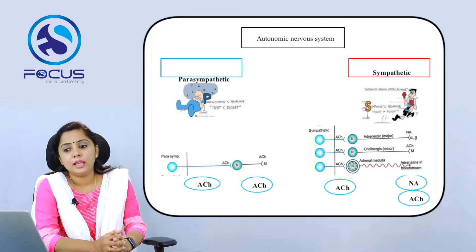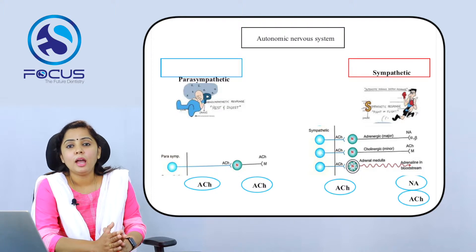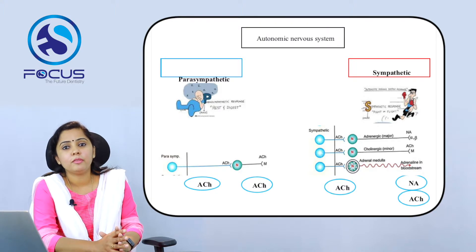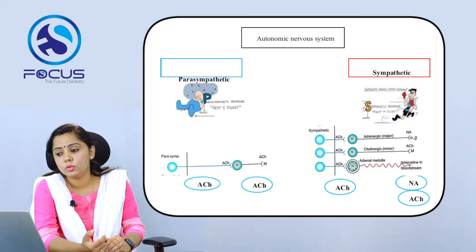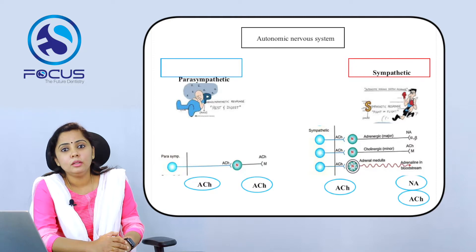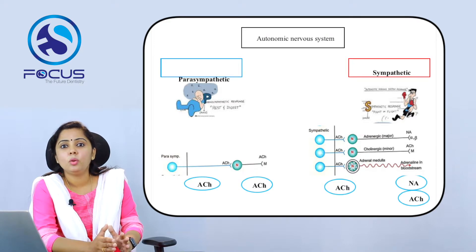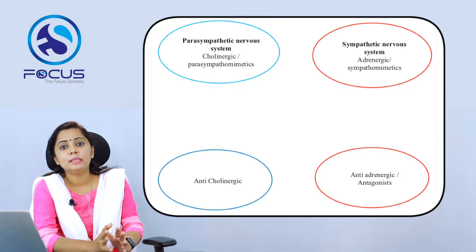The neurotransmitter involved in the parasympathetic system is acetylcholine in both the pre- and post-synaptic ganglia. In the sympathetic system, the pre-ganglionic fibers use acetylcholine as a neurotransmitter, while the post-ganglionic fibers mainly use noradrenaline. For minor vessels and minor nerves, the neurotransmitter is acetylcholine. In the parasympathetic system, the ganglia are located near the affected organs, whereas in the sympathetic system the ganglia are located away from the affected organs, meaning the post-ganglionic fibers are longer.